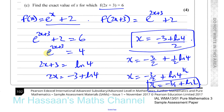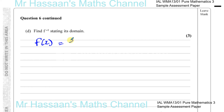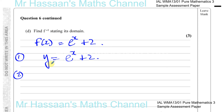Now part D says: find the inverse of f, stating its domain. f of x equals e to the power of x plus 2. To find the inverse, first change f of x to y, so y equals e to the power of x plus 2. Second, swap x and y: x equals e to the power of y plus 2. When finding the inverse function, the x-axis becomes the y-axis and vice versa.